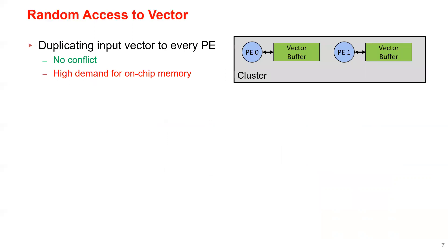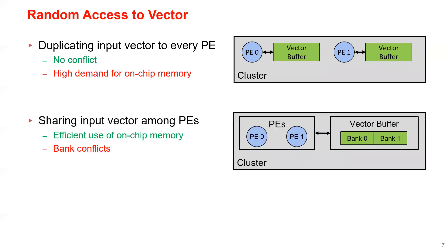Now let's talk about how to deal with the random access to the input vector. A straightforward way is to duplicate the input vector to every PE in the system. This approach guarantees no conflicts across PEs, but has a high demand of on-chip memory.